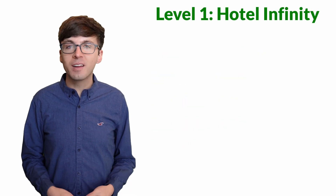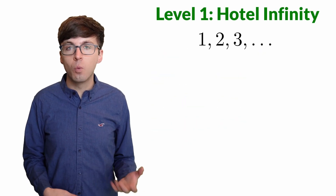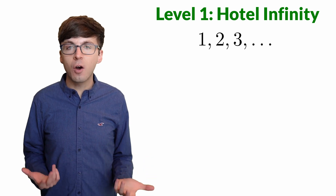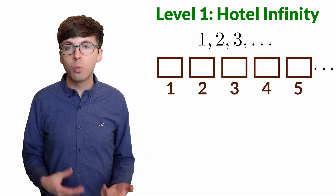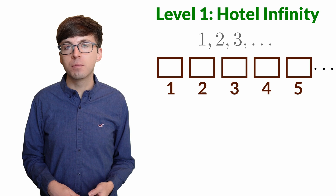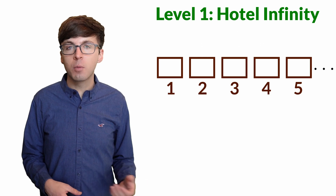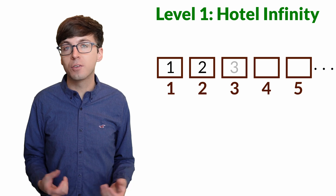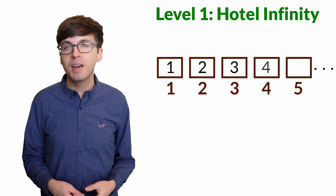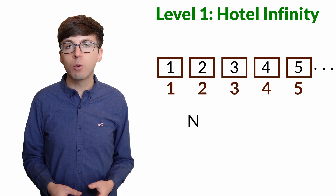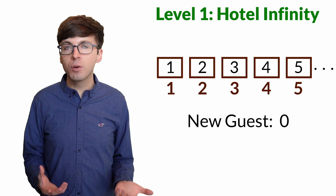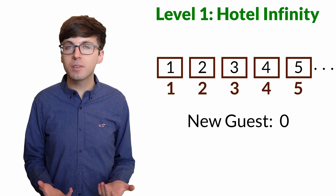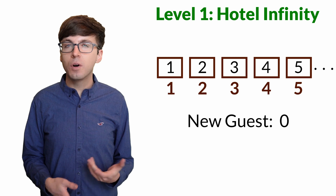For level one, let's start with the natural numbers: one, two, and so on. Let's imagine a hotel infinity that has one room for each natural number. So number one stays in room one, number two stays in room two, and so on. Now say that the number zero arrives. All of the rooms in the hotel are full, but can we accommodate this extra guest?